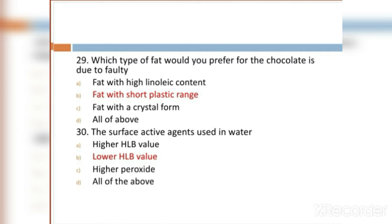MCQ 30: The surface active agent used in water has: Option A: high HLB value. Option B: lower HLB value. Option C: high pericyte. Option D: all of the above. Option B, lower HLB value, is the right answer.